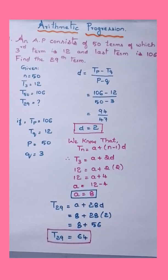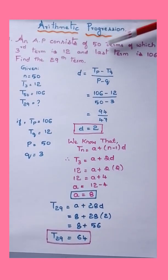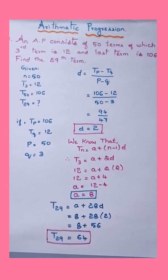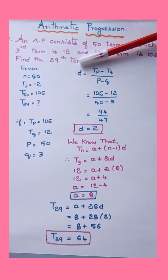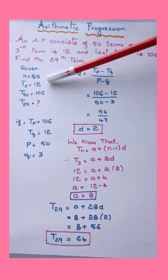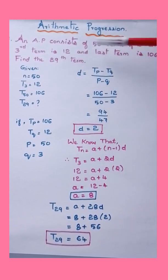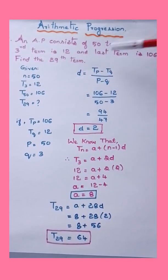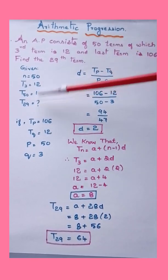In the previous video we already solved a few sums related to arithmetic progression. Today let's see another type of problem. An AP consists of 50 terms, of which the third term is 12 and the last term is 106. Find the 29th term. So n is equal to 50, T3 is 12, and the last term T50 is equal to 106. We have to find T29.